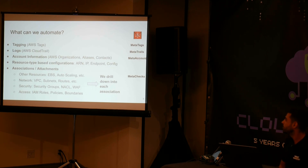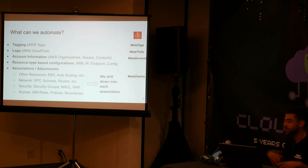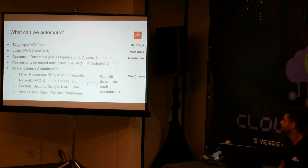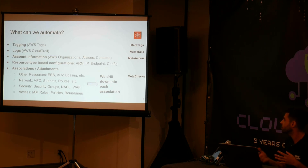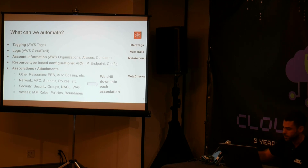This tool, MetaHub, lets you get all this information together from your affected resources in the form of what are called meta outputs. We have meta tags for tagging, meta trails for logs, meta account for information about the account, and meta checks where we check the configuration from the affected resource and all their associations.